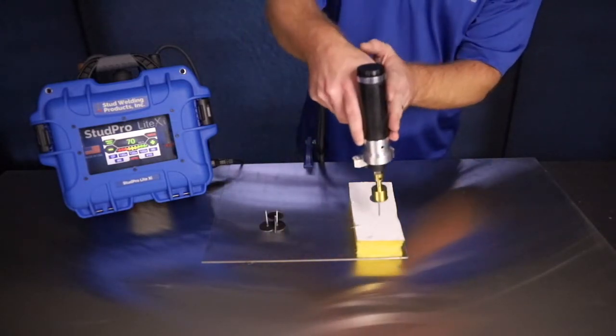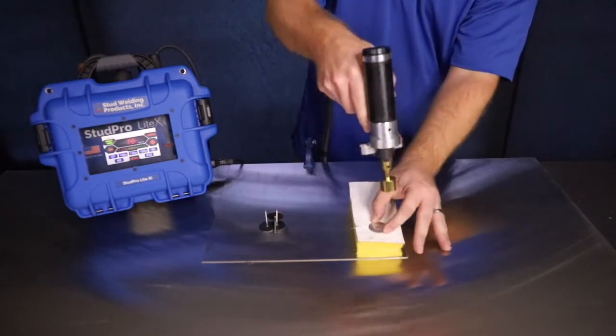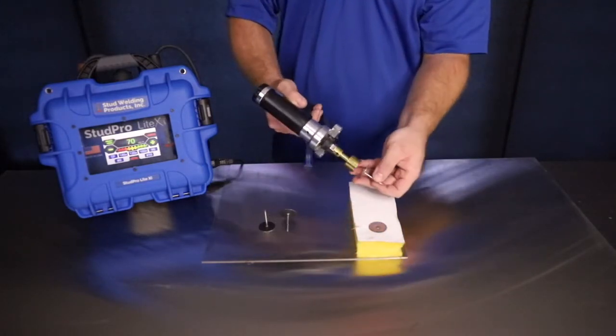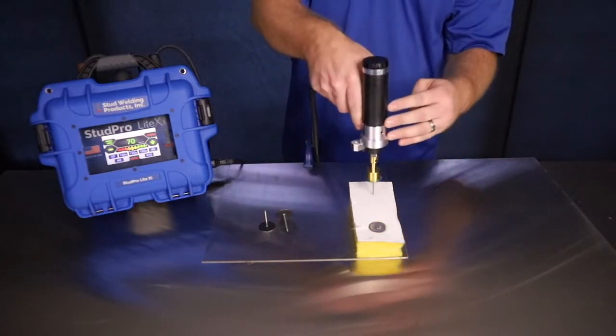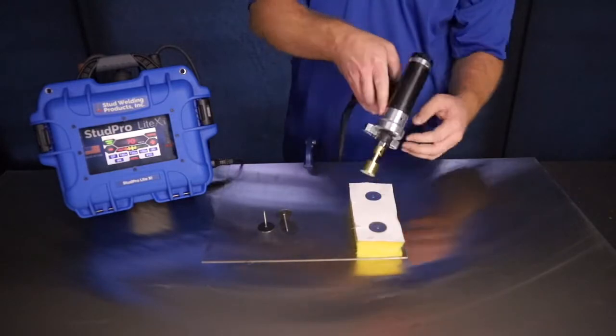When shooting cuphead pins, you'll want to employ a technique called floating the gun. We want to compress the gun shaft to the center of its travel. We want to avoid compressing the gun shaft completely. You can see the technique demonstrated here.